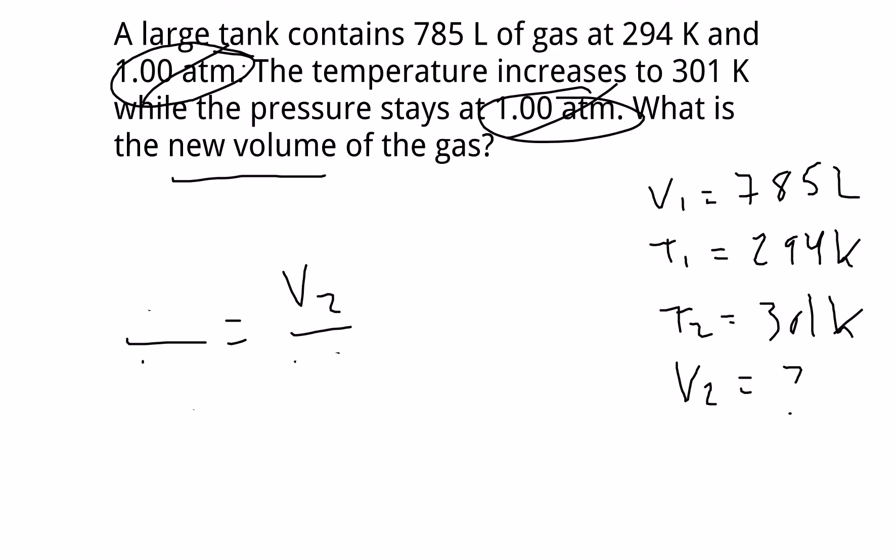V1 would be 785. T1 would be 294. V2 is what we're looking for. And T2 would be 301 Kelvin.